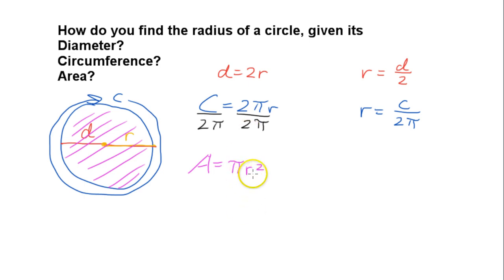So, first thing we need to do to get r by itself, we need to divide each side by pi. So what we'll be left with is A over pi equals r squared. Remember, this is r squared here.